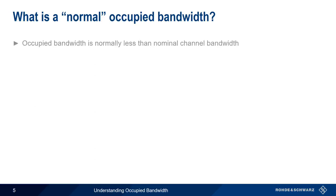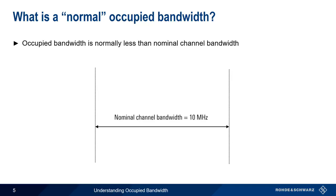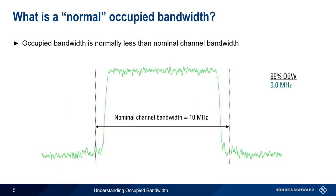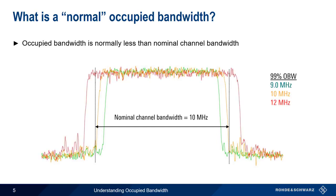The occupied bandwidth of a signal is normally less than the nominal channel bandwidth. For example, a nominally 10 MHz wide LTE signal will typically have a 99% occupied bandwidth of about 9 MHz, as shown in green here. The orange trace shows a 10 MHz wide LTE signal with an occupied bandwidth of 10 MHz — this might sound okay, but actually this is neither expected nor normal. And a nominally 10 MHz wide LTE signal that has an occupied bandwidth of 12 MHz, as shown in red, is clearly a problem.